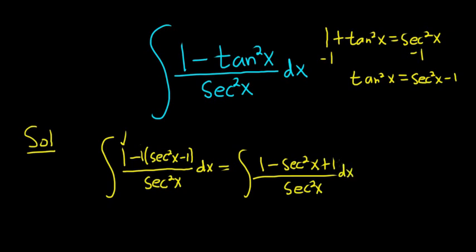Let's keep going, see if we can rewrite this and hopefully work it out. So this is equal to the integral. So 1 plus 1 is 2. So we'll do that. So 2 minus secant squared x over secant squared x dx. So I'm thinking now we can break it up and just keep going.